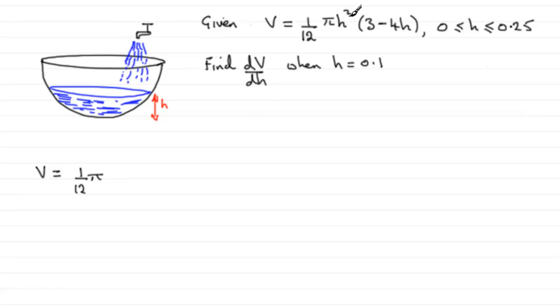But expand partially then this bracket as h² times 3, which is 3h². And then I've got h² times the minus 4h, which is minus 4h³.